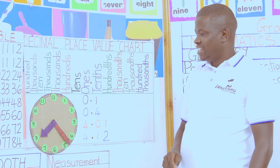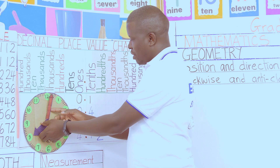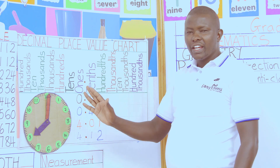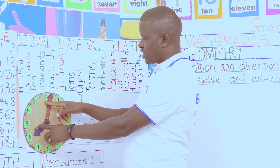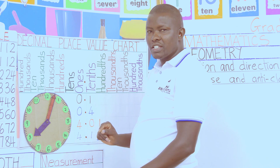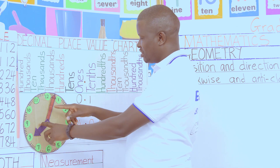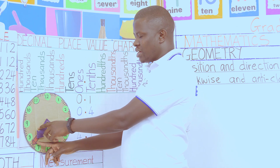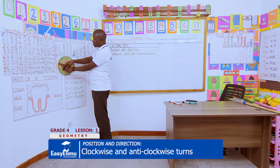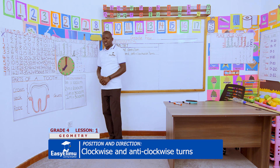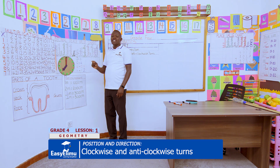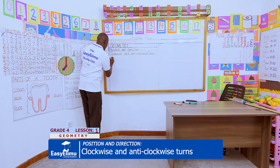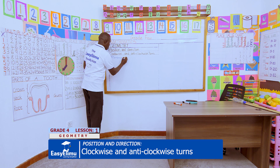We can repeat. The minute hand is the longer one — move it towards the right. As it moves, it goes this side. Remember, if you've done it the first time, let your partner do it too. Continue moving it to the right — it is rotating to the right until it comes back to its original position. This movement to the right is what we call clockwise movement.